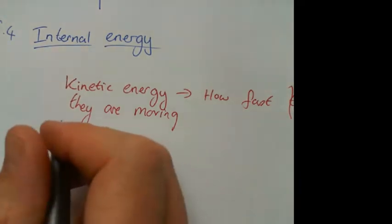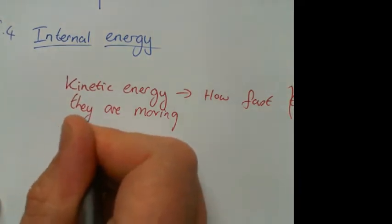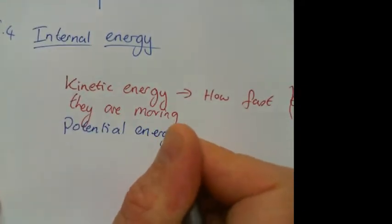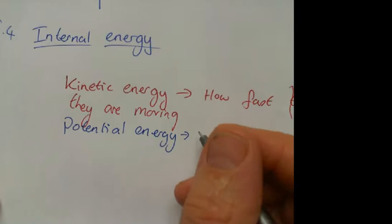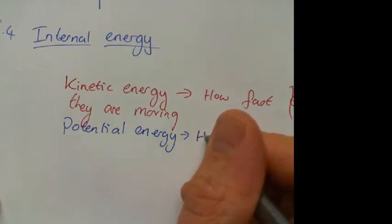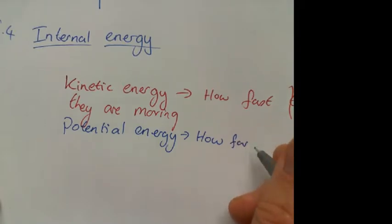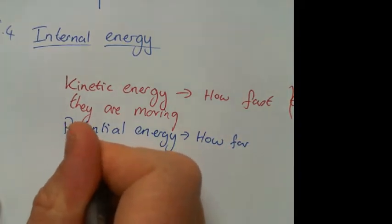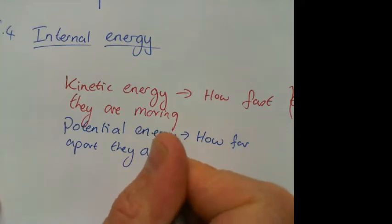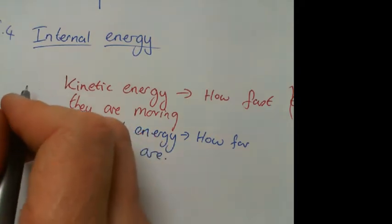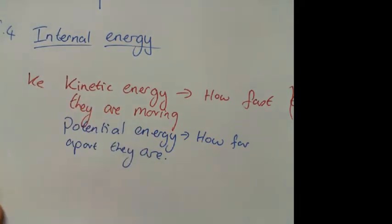And the other type of energy is their potential energy. And that is how far apart they are. And the internal energy, so we'll call this one Ke, and we'll call this one Pe.